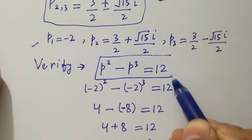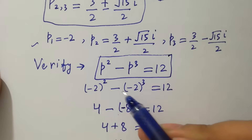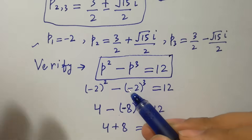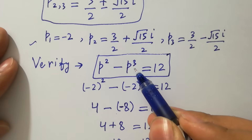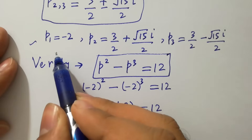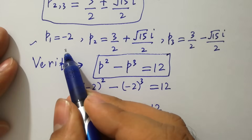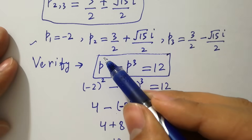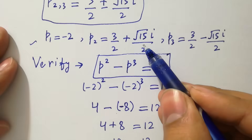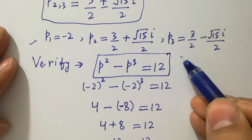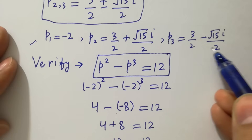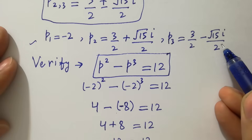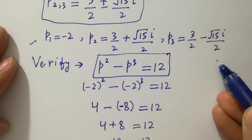In this equation the highest power is 3, which means we get 3 answers. So p₁ equals minus 2, p₂ equals 3 over 2 plus square root of 15 times i over 2, and p₃ equals 3 over 2 minus square root of 15 times i over 2.